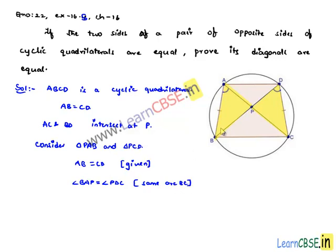And also, angle PBA is equal to angle PCD, since these are the angles formed by the same arc AD.